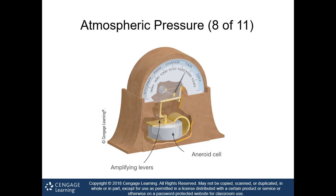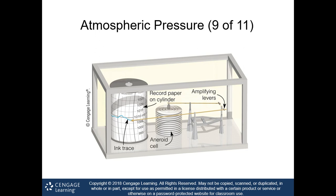The needle fluctuates based on atmospheric pressure — I actually have one on my wall at home and compare it to the National Weather Service. A barograph is a special type of barometer that records a continuous trace of pressure over time, with a rotating paper drum and an ink trace recording barometric pressure history.